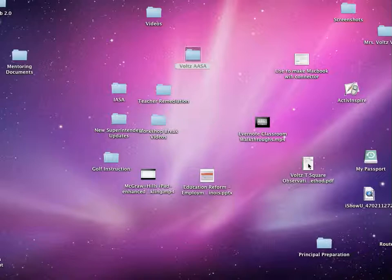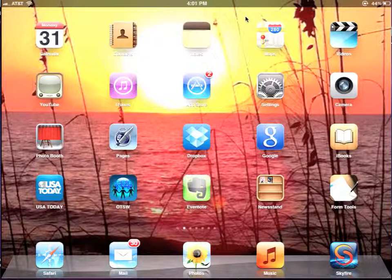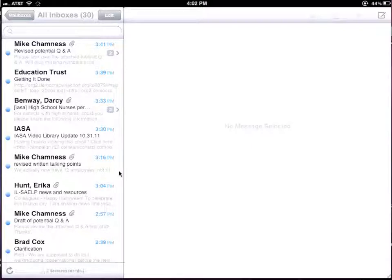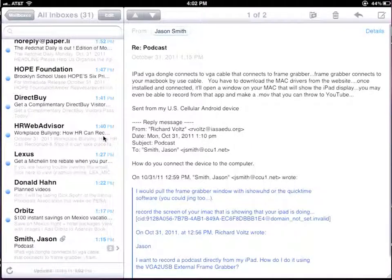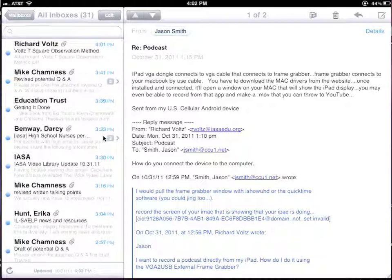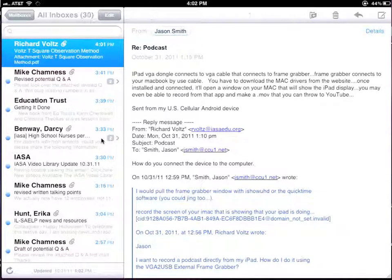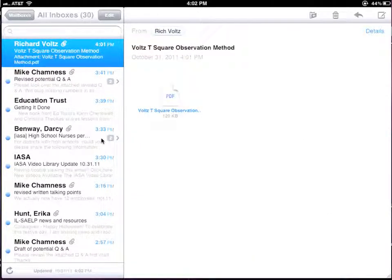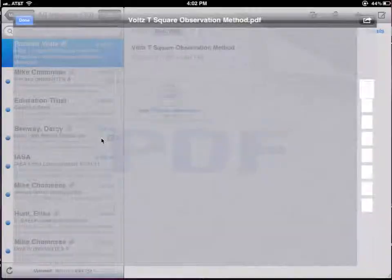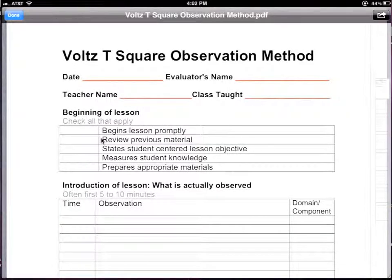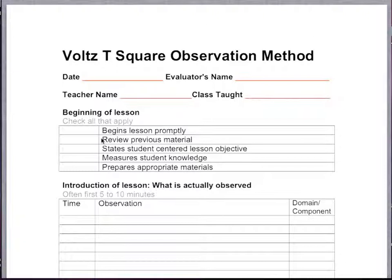The next thing you need to do is email this file to yourself. Whatever your email system is, you'll email it to yourself. After you have emailed this file to yourself, you're going to go to Mail and click on Mail. Then you're going to find this file that you just emailed to yourself. You can see I've emailed this Voltz T-Square Observation Method to myself. I'm opening it up on my iPad.